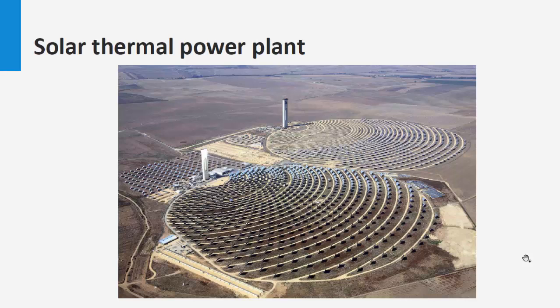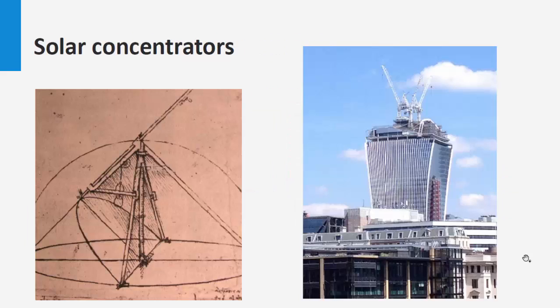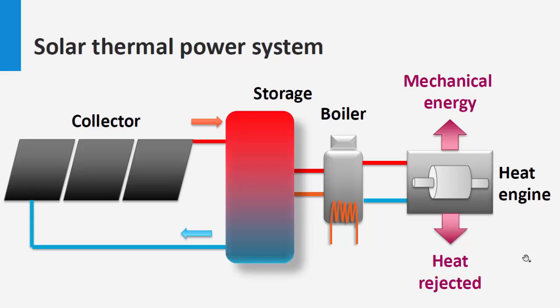The fluid raises its temperature to values between 100 and 500 degrees Celsius due to the concentrated sunlight, and is then used to move a turbine in a heat engine and produce electricity. The problem with this system is that the efficiency of the collector diminishes as its operating temperature rises, while the efficiency of the engine increases as temperature rises, so a compromise between the two has to be found when choosing the operating temperature.